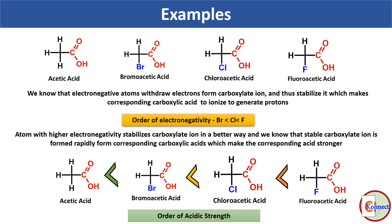Similarly, chlorine is more electronegative than bromine. This makes chloroacetic acid stronger than bromoacetic acid and acetic acid. Thus among all these carboxylic acids, acetic acid has the lowest acidity while fluoroacetic acid has the maximum acidity.